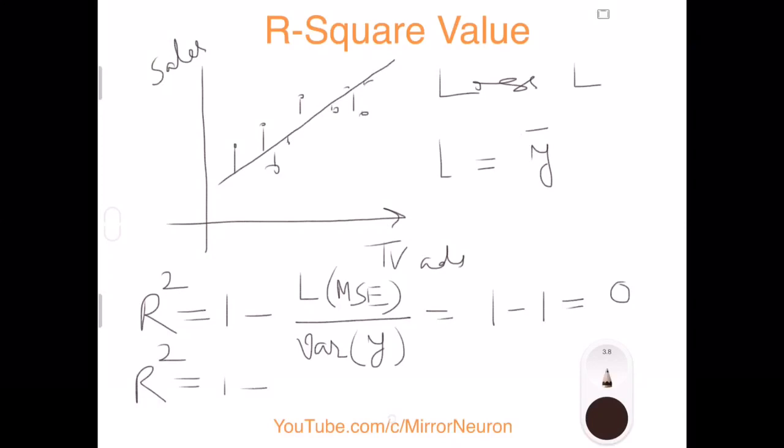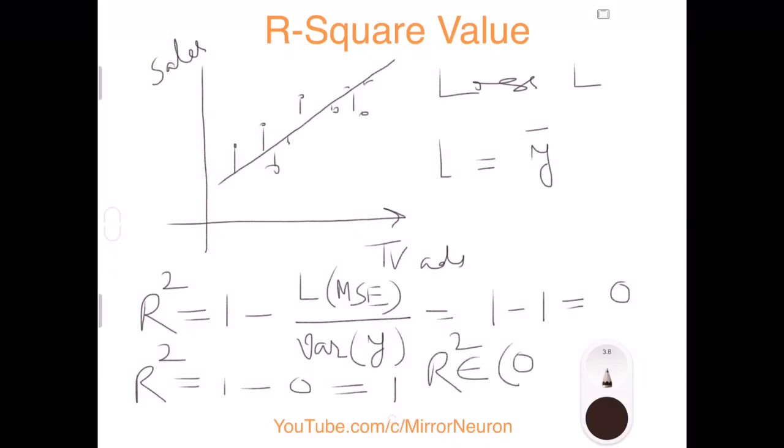And if my loss function is 0, which implies that my model has very well fit the data, in that case it will be 1 minus 0 because my loss function is 0, so my R-squared value is 1. So that means my R-squared belongs to 0 and 1.